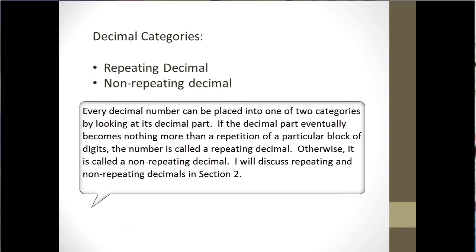Every decimal number can be placed into one of two categories by looking at its decimal part. If the decimal part eventually becomes nothing more than a repetition of a particular block of digits, the number is called a repeating decimal. Otherwise, it is called a non-repeating decimal. I will discuss repeating and non-repeating decimals in section 2.